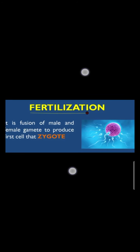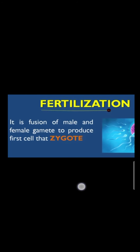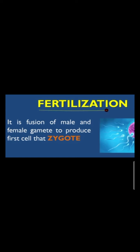A rabbit can produce 10 to 30 offspring, and similarly different animals can produce different numbers of individuals. The fruit fly can produce about 900 offspring per year.